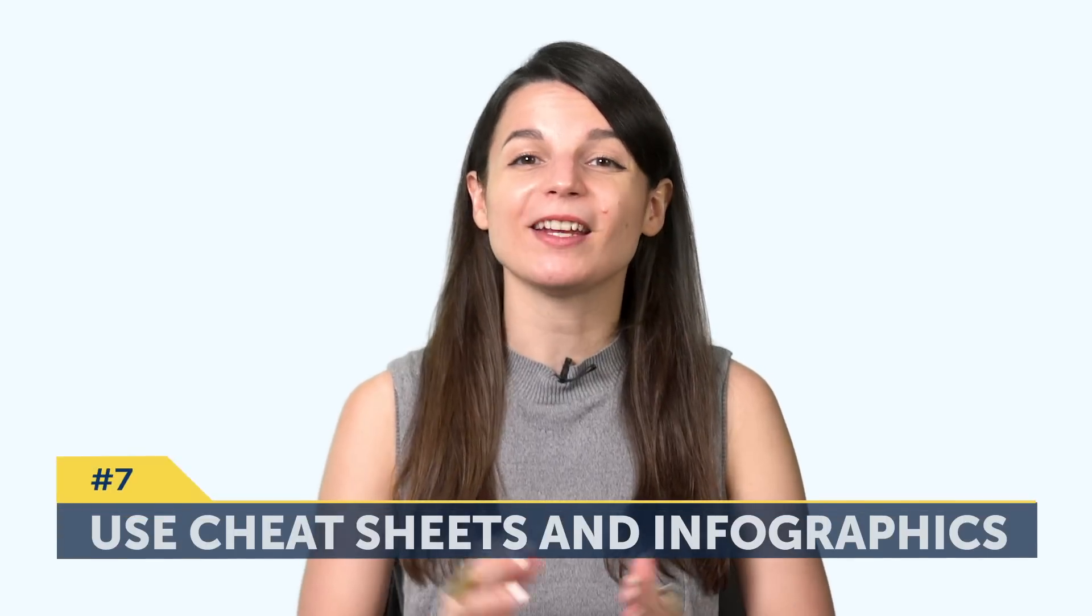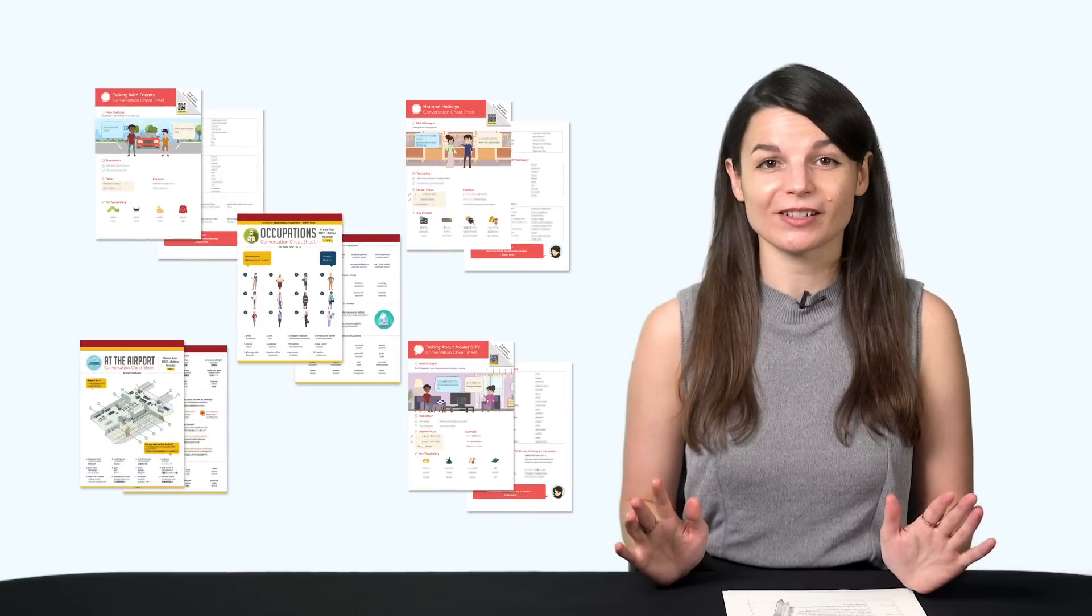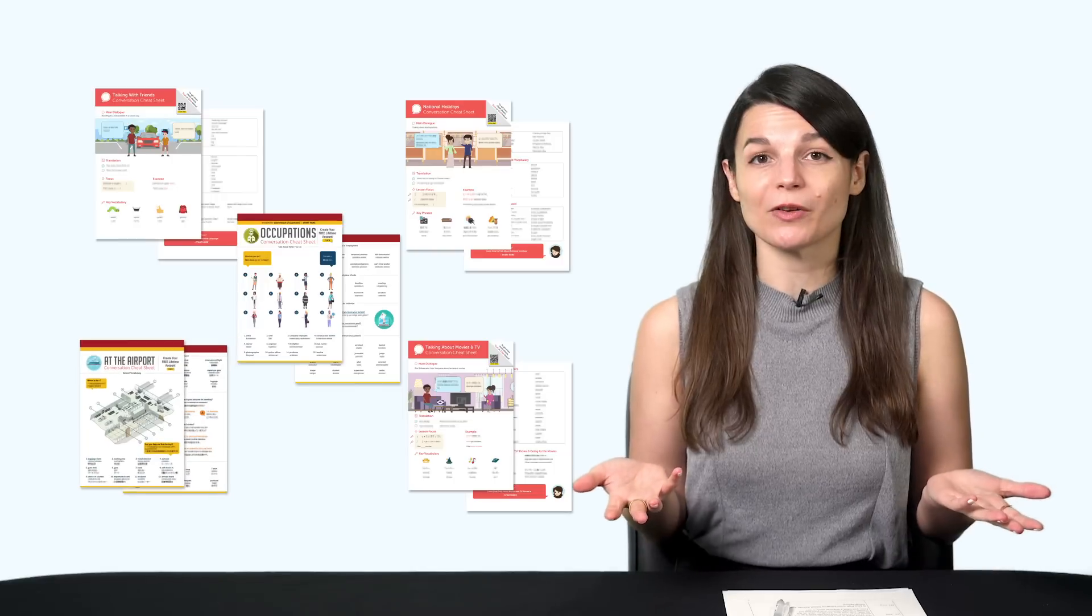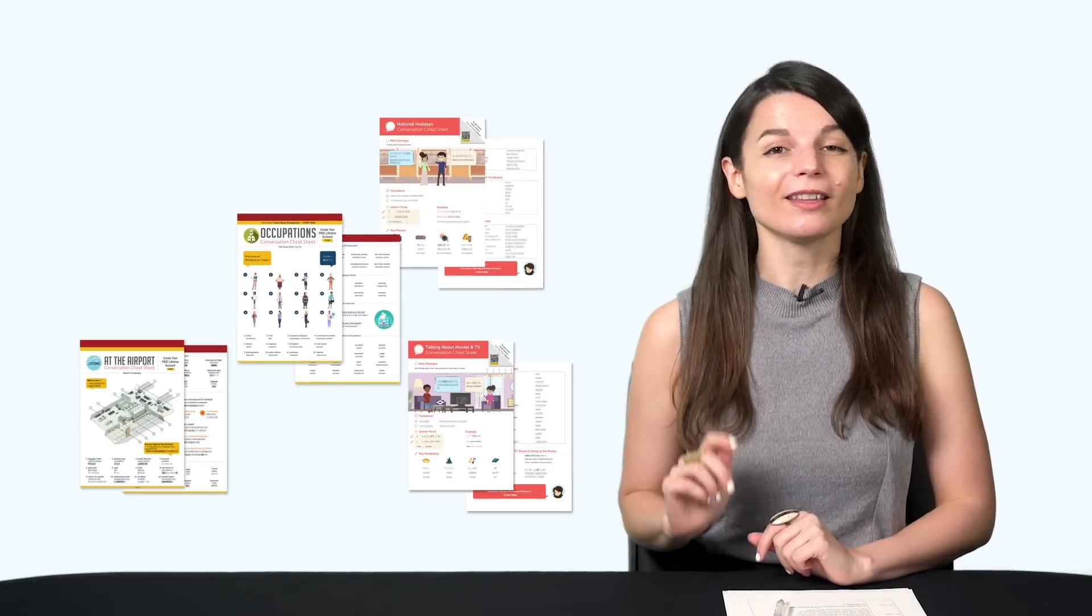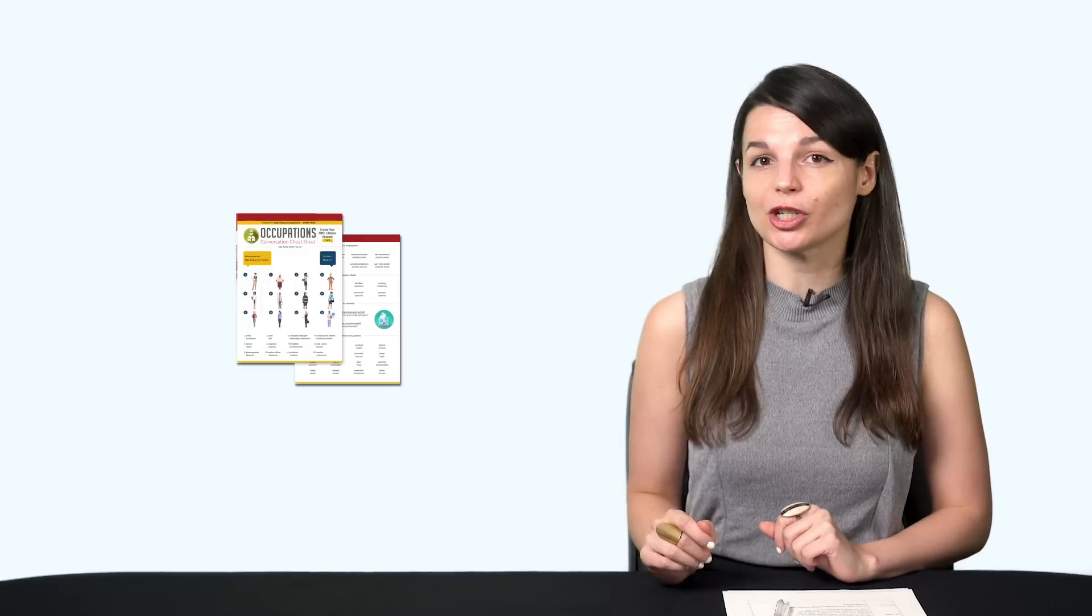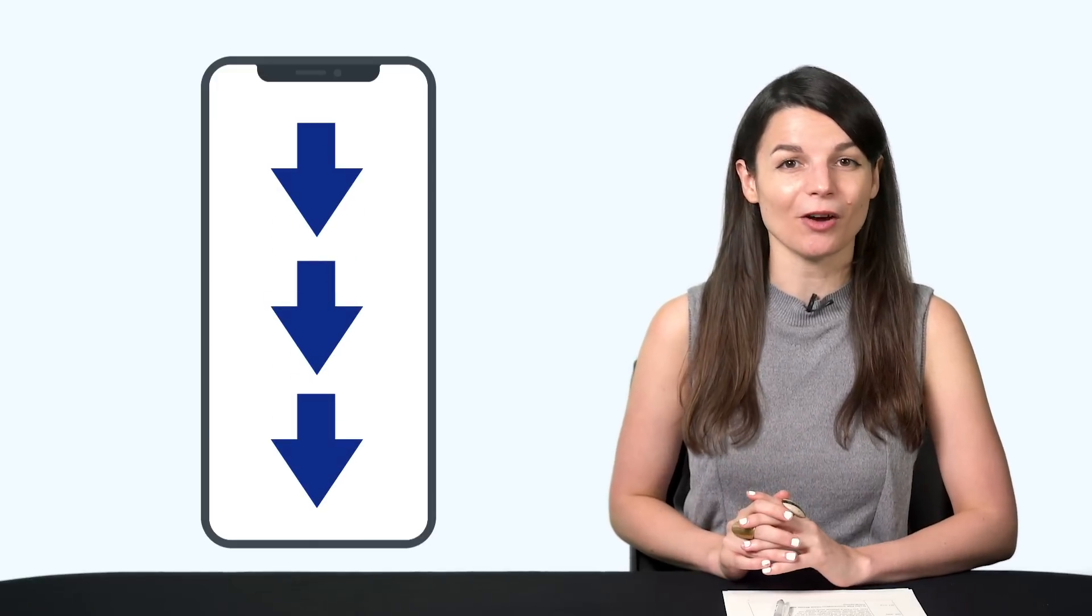Seven, use PDF conversation cheat sheets and infographics. These teach you the must-know words and phrases for all kinds of topics. Travel, basic conversations, talking about hobbies, airport vocab, and much more. You can print these out or save them to your device. With the infographics, you can save the images to your phone and just swipe through them for a quick review. We'll leave the links to the PDFs and infographics in the comment section of this video.